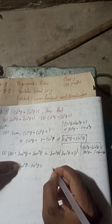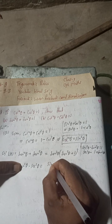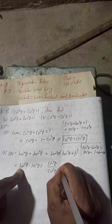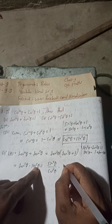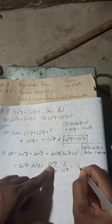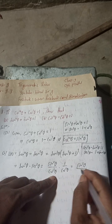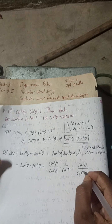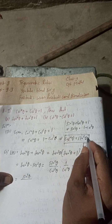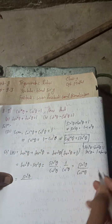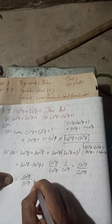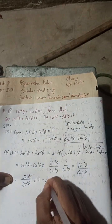Now tan²θ can be written as sin²θ/cos²θ, and sec²θ = 1/cos²θ. So this becomes sin²θ/cos²θ × 1/cos²θ = sin²θ/cos⁴θ. Now we have derived that cos⁴θ = sin²θ, so substituting: sin²θ/sin²θ. Both cancel and we get 1, which equals RHS. Proved.